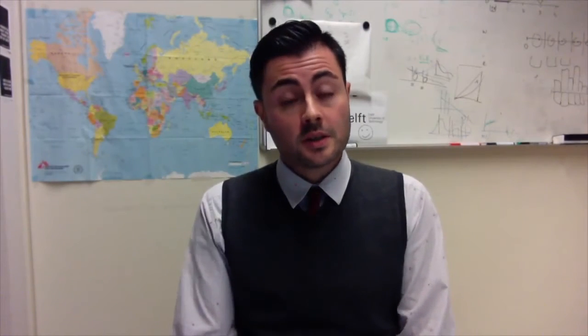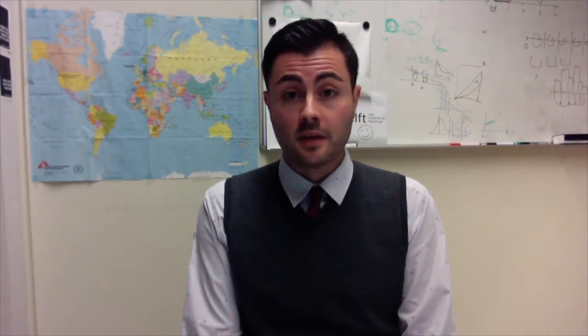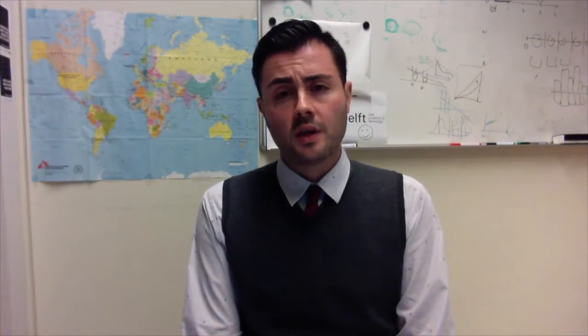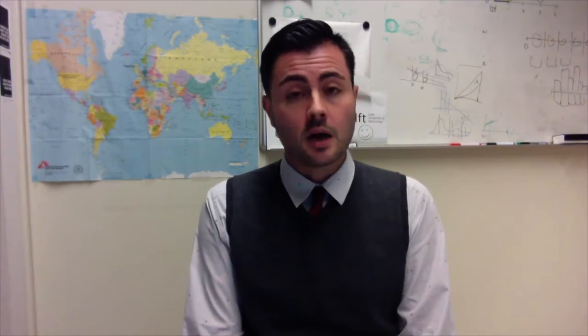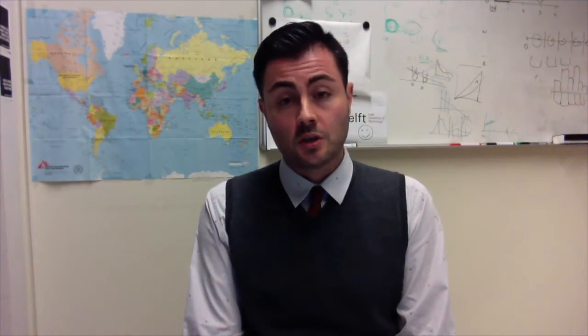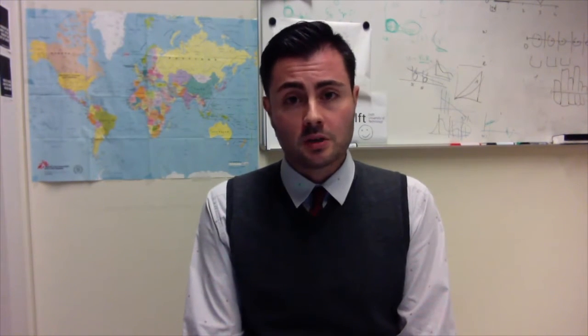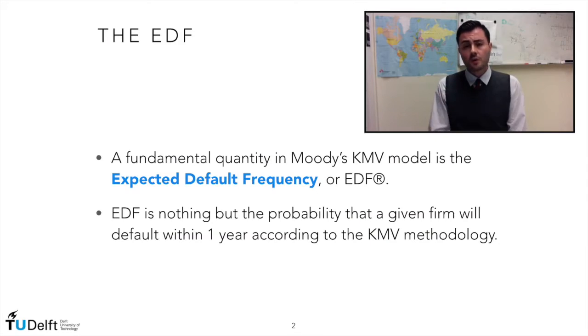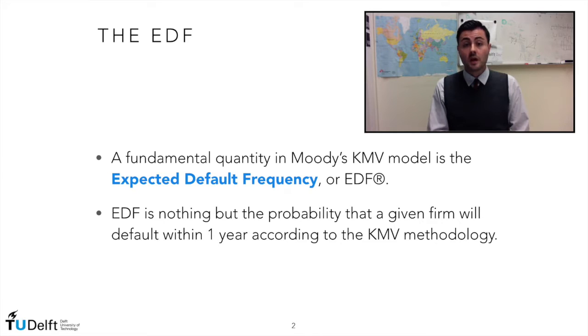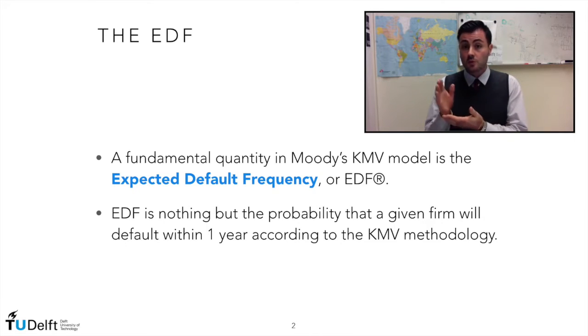Hi there! In this video lesson we will deal with Moody's KMV. Moody's KMV is one of the most important industry models for the estimation of the probability of default of a counterparty. Or, if we want to use Moody's terminology, instead of the PD, we will deal with the EDF, the expected default frequency.